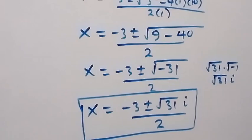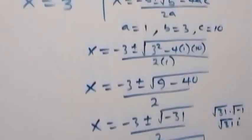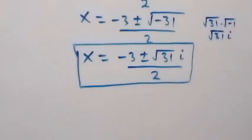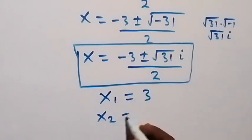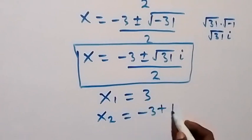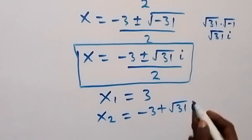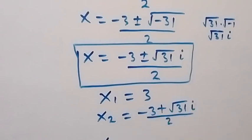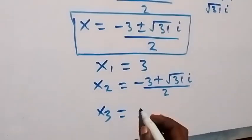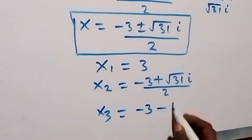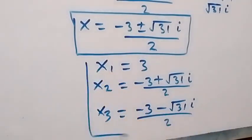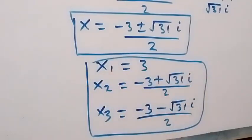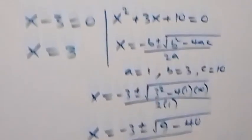So from here we have two complex or imaginary solutions. All together we have three solutions to this problem. The first one: x₁ equals to 3. The second: x₂ equals to minus 3 plus root 31·i, over 2. The third: x₃ equals to minus 3 minus root 31·i, over 2. Thank you for watching — don't forget to subscribe to my channel, turn on notifications, and see you next lesson.